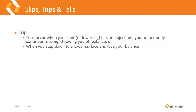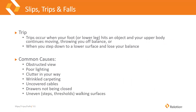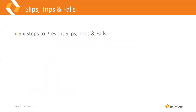A trip occurs when your foot or lower leg hits an object and your upper body continues moving, throwing you off balance — or when you step down to a lower surface and lose your balance. Common causes for a trip include obstructed view, poor lighting, clutter in the way, wrinkled carpeting, uncovered cables, drawers left open, and uneven walking surfaces. Even just an inch of height difference going from one surface to another can cause somebody to trip pretty easily.